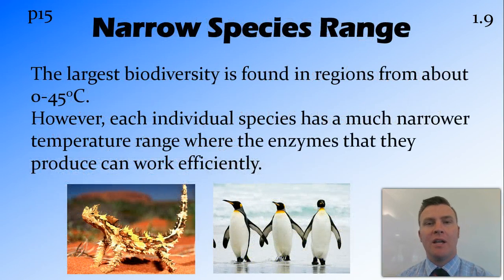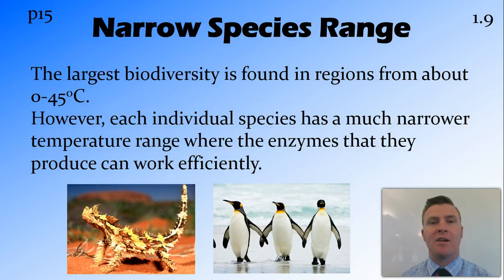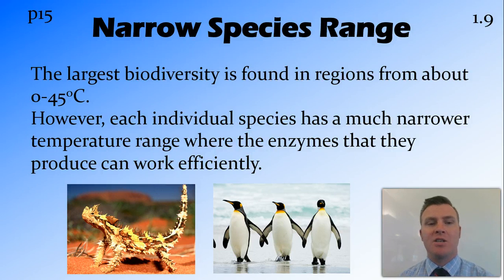Although in that broad temperature range we find organisms living from the very cold to the very hot, the largest range for biodiversity is found between 0 and 45 degrees Celsius. However, each individual species has a much narrower temperature range where it can live, because the enzymes it produces are only able to work efficiently in a much smaller temperature range.